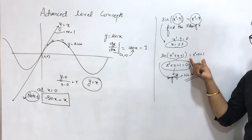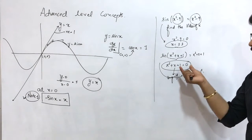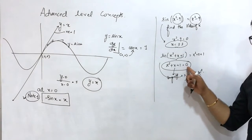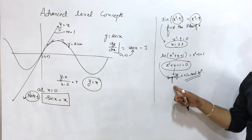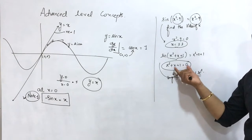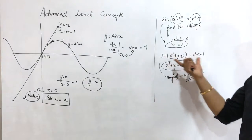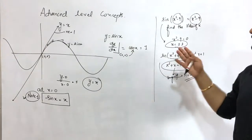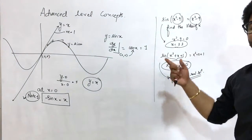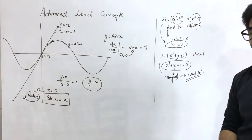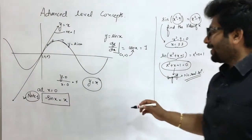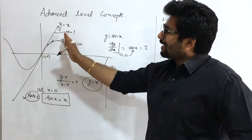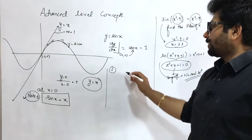So sin of an argument equals that argument only when the argument equals zero. Since x² + x + 1 is never zero (its roots are imaginary), there is no real solution. So from this analysis, we know sin(x) = x only at x = 0. Now, what is the second note? Note 2: the graph of x is always above the graph of sin(x), so x > sin(x) for all positive x.